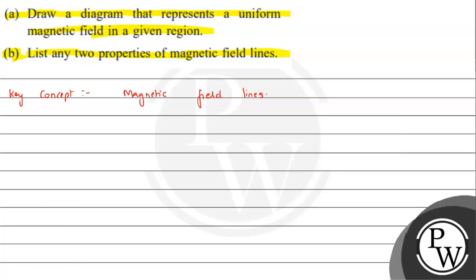let's take a look at it. So we have the first part where we need to make a diagram that is a uniform magnetic field in a given region. So equidistant parallel straight lines will represent a uniform magnetic field. Okay, so if we look at it, it will be something like this.